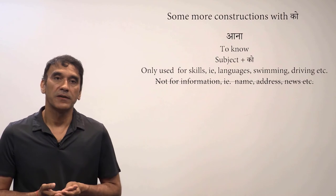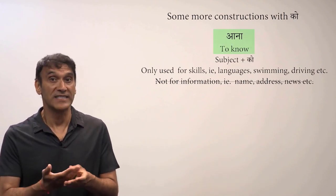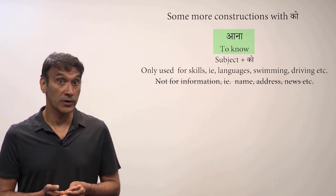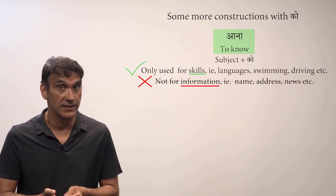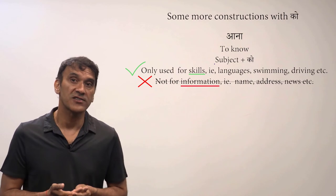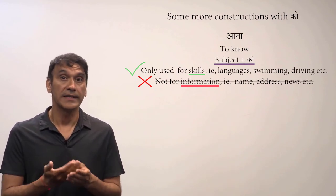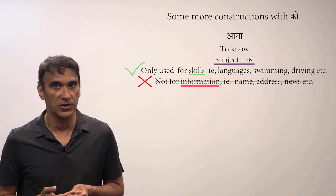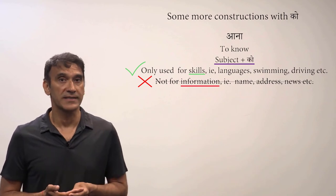Let's now take the verb 'aana' in the meaning of 'to know.' The verb 'aana' as we all know means 'to come,' but it also means 'to know.' Unlike 'pata hona' and 'malum hona,' the verb 'aana' in the meaning of 'to know' is used only for skills such as language, driving, swimming, etc. In such constructions too, the subject takes the postposition 'ko,' and the verb 'aana' is dictated in number and gender by the skill expressed.